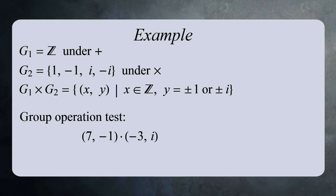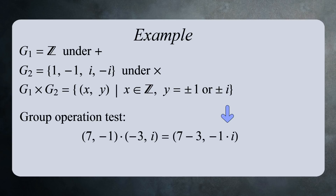Let's pick two random elements from the direct product — how about (7, -1) and (-3, i)? You could use a new symbol for the direct product group operation, like an asterisk, but we'll keep things simple and use multiplicative notation. To combine these two pairs, we add the first components and multiply the second components, because the group operation for G1 is addition and the operation for G2 is multiplication. This gives us (4, -i).